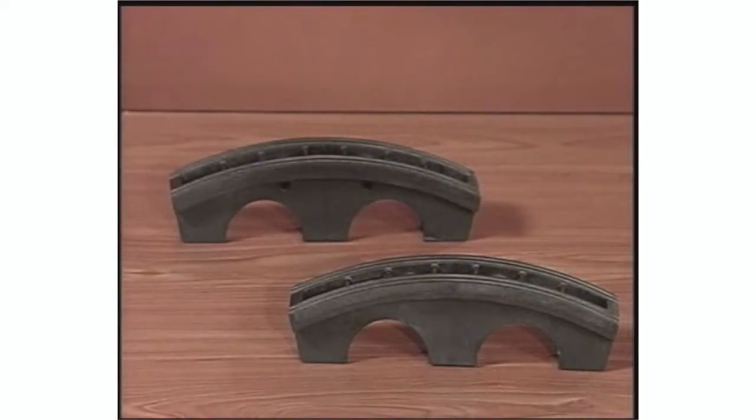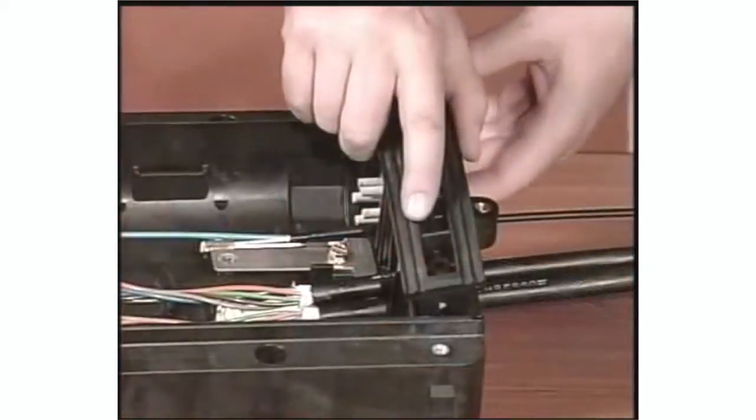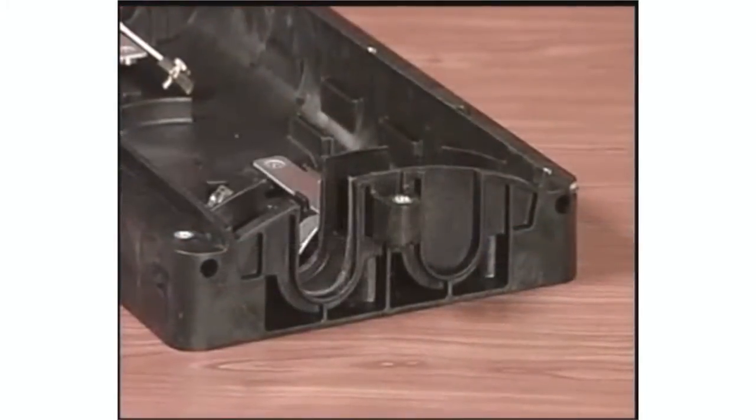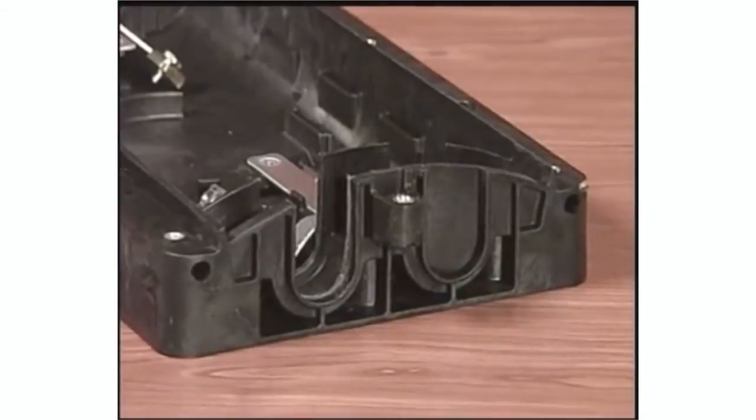But before we begin, I want to point out a few key features. This closure boasts a unique end plate design that makes cable entry and installation a snap and re-entry a breeze. A technician simply removes the factory sealed knockouts on the cable entry ports to be used, and then seals the cables with our exclusive silicone grommet system. So let's get started.